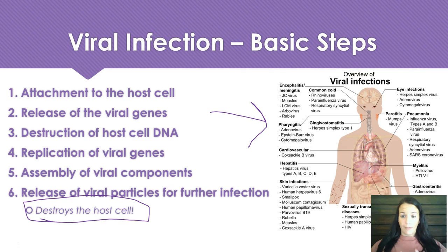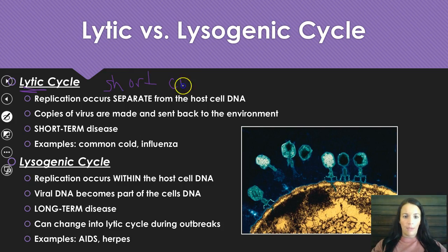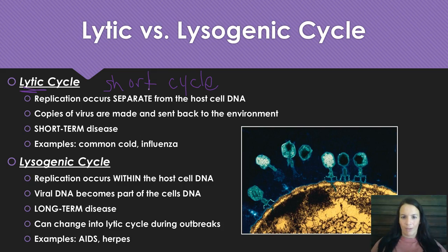The lytic and the lysogenic cycle: the lytic cycle is short — it's a short word, it's a short cycle. The viruses are made and sent back to the environment, and it's a short-term disease. Things like the common cold and influenza — if you've gotten a cold before, you don't keep it for the rest of your life; it goes away.